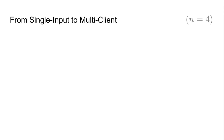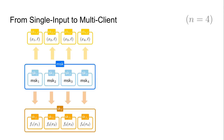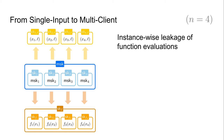We now present our construction for the specific case of four parties. The trivial solution is to run four different instances of a single-input scheme, and whenever a key for the separable function is requested, generate a key for the individual function under each single-input instance. The final functional key consists of all the keys of the single-input schemes, and decryption sums up all the resulting values. The problem is that this results in instance-wise leakage of the function evaluation.